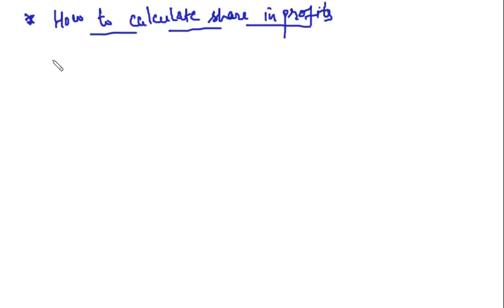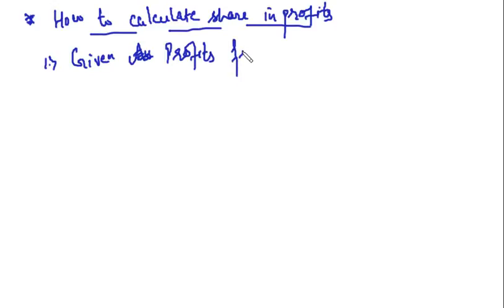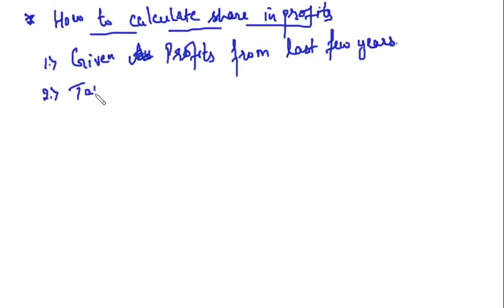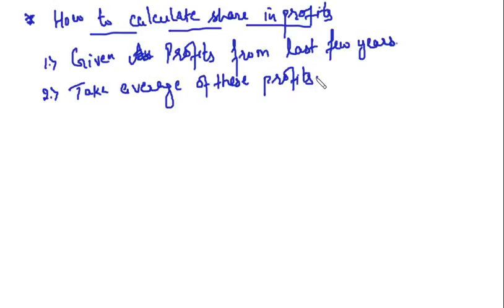This is a very simple topic. Number one: you will be given the profits from the last few years. What does this reflect? It reflects that on an average, for the last few years, we have earned this much profit every year.